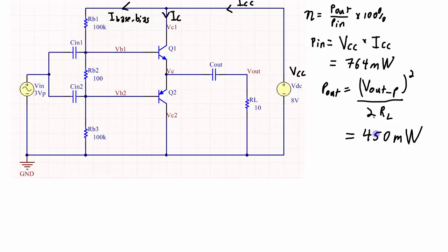So now I've got an input power and an output power. I can take those two numbers, plug it into my efficiency equation and I get 450 milliwatts over 764 milliwatts times 100 percent which gives me an efficiency of 58.9 percent. So 58.9 percent of the power coming in is actually used by the load resistor.